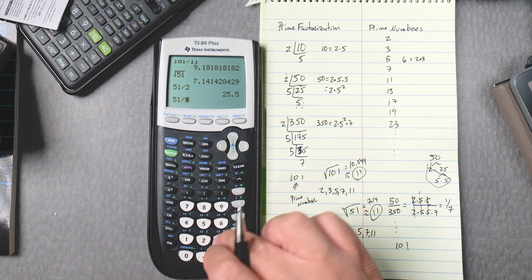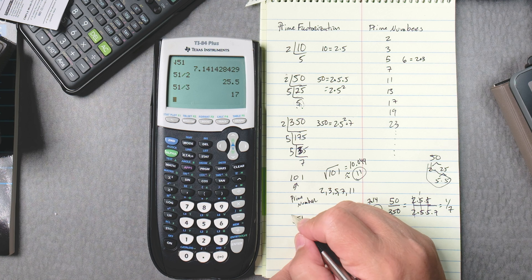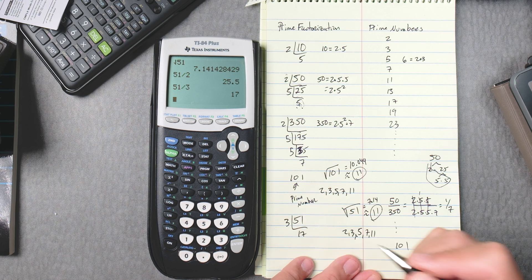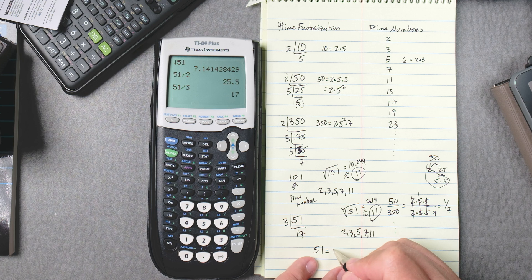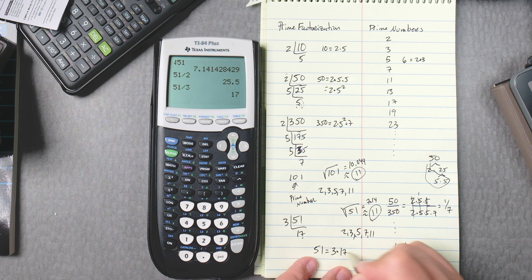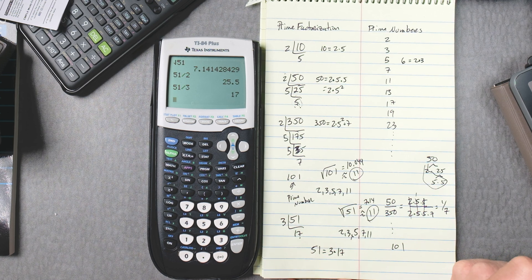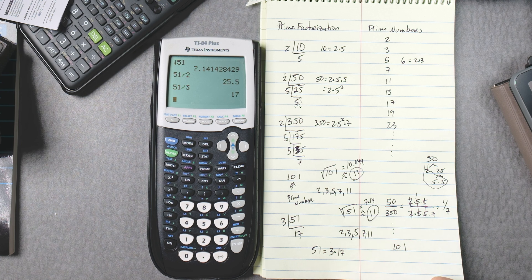17 is a prime number. We stop. 51 can be broken down into 3 times 17. So it is a composite.